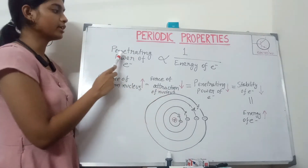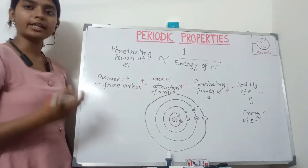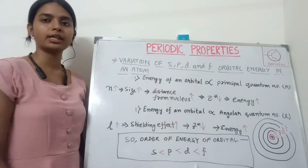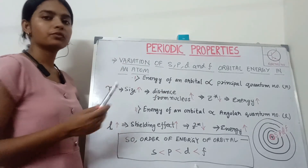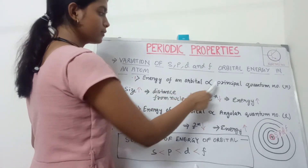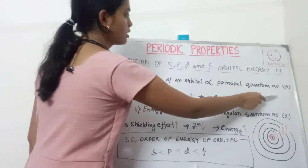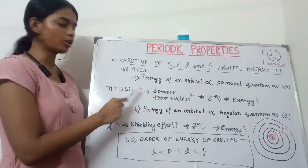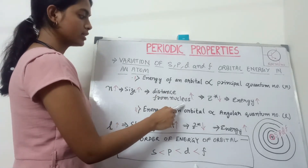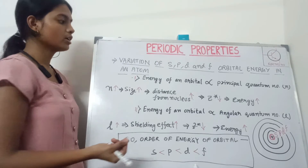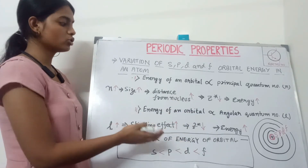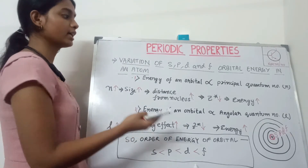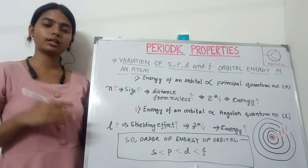So penetrating power of an electron is inversely proportional to the energy of that electron in that orbital. Now we will see the variation of S, P, D, F orbital energies in an atom. First, the energy of the orbital is directly proportional to the principal quantum number n. As the n value increases, the size of the orbital increases, the distance from the nucleus increases, the attraction force decreases, Z-effective decreases, and therefore energy increases as stability decreases.